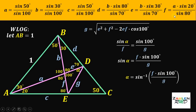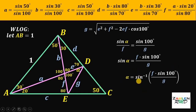Plugging all those values into our calculator, we get the exact value of angle alpha, which is equal to 40 degrees. For those who got 40 degrees, you are absolutely correct. And as always, we're done.